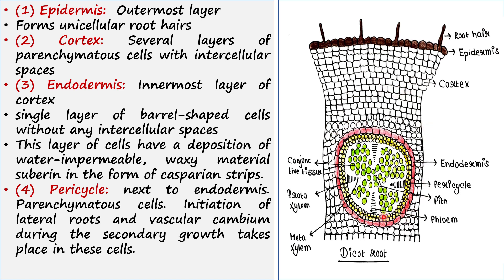The next layer is the endodermis, which is the innermost layer of the cortex. Only a single layer of cells is present here — this brown layer is the endodermis. These are barrel-shaped cells with no intercellular spaces between them. Endodermal cells have a special deposition of a water-impermeable waxy material called suberin, in the form of Casparian strips.